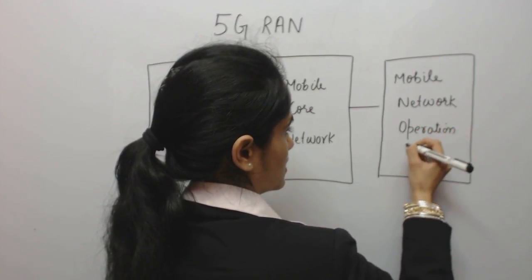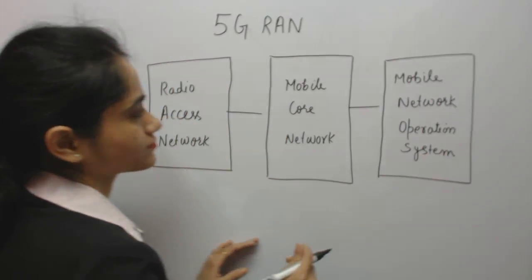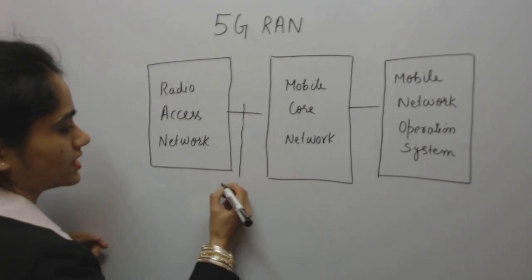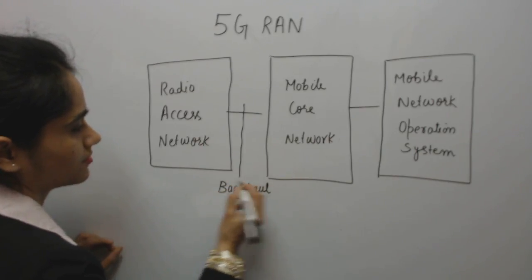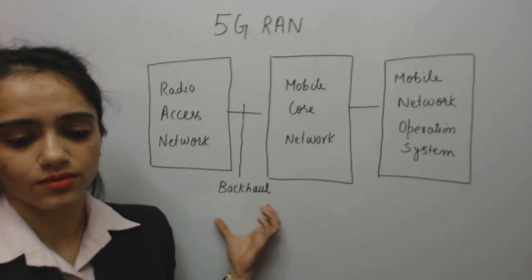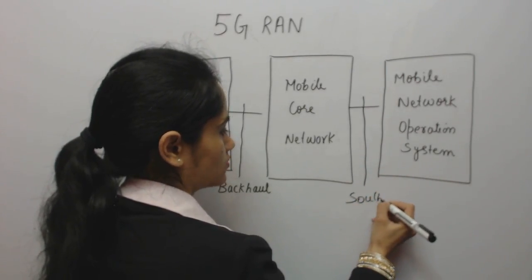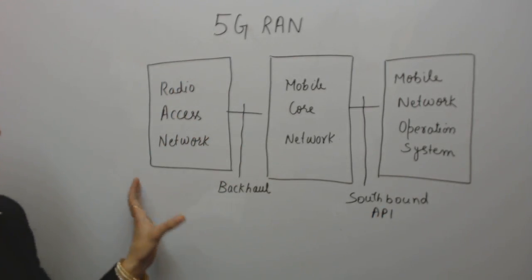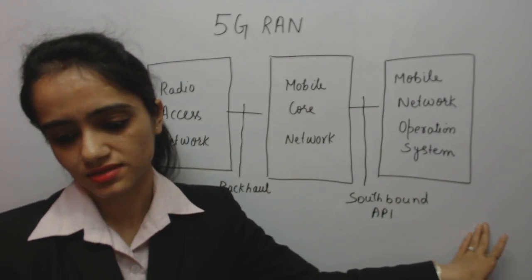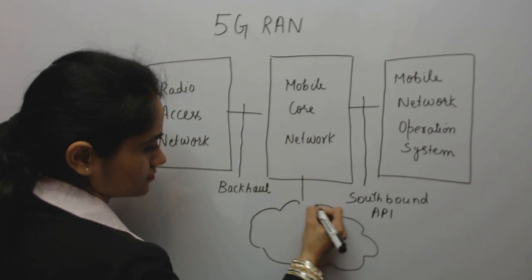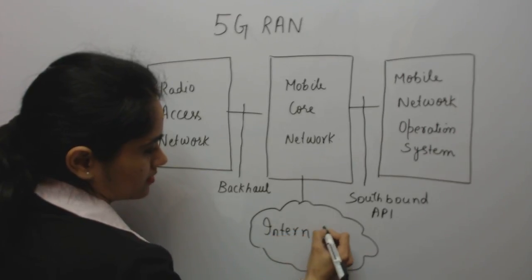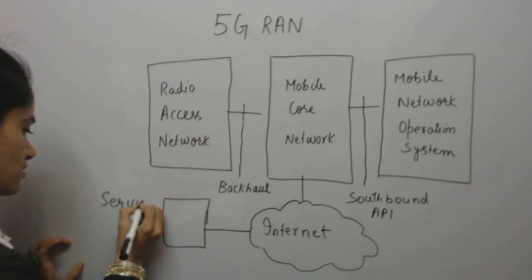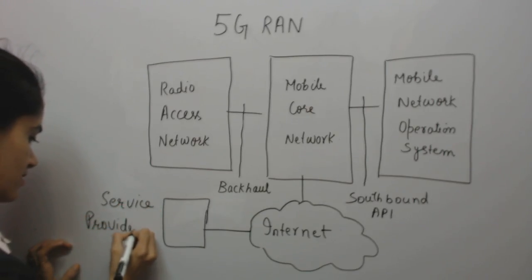The Radio Access Network is connected to the Mobile Core Network and the Mobile Network Operation System. The link between the Radio Access Network and the Mobile Core Network is called backhaul. These are connected with the help of a southbound API. The core network is further connected to the internet, and we are having various service providers.